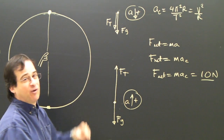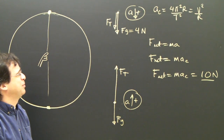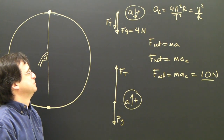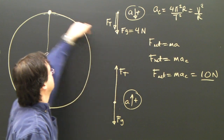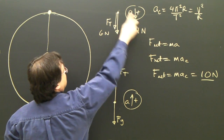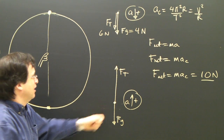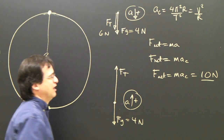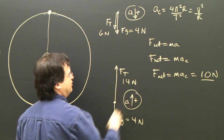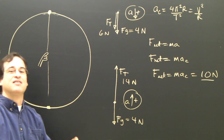Let's pretend the gravity on this rock is 4 newtons. At the top, I need 10 newtons towards the center. I already have 4 newtons from gravity, so the tension in the rope must be 6 newtons. 6 newtons down plus 4 newtons down gives me my 10 newtons — the object continues in a circle. At the bottom, I still need 10 newtons towards the center (which is up). With gravity at 4 newtons down, the tension must be 14 newtons up. 14 up minus 4 down gives me my 10 towards the center.